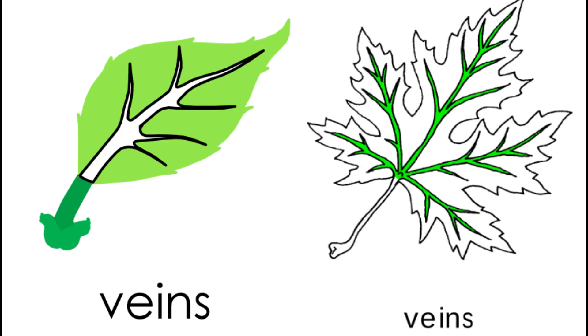The veins of a leaf function like the veins in the human body by bringing nutrients to all parts of the leaf. The veins are hard and act as support to the softer parts of the leaf, like a skeleton.